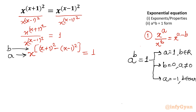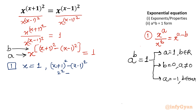Starting with Case 1: base equals 1, so x = 1. We only need to check that the exponent is real. Putting x = 1 into (x+1)² - (x-1)²: we get (1+1)² - (1-1)² = 2² - 0² = 4 - 0 = 4, which is real. Therefore x = 1 is a true solution.